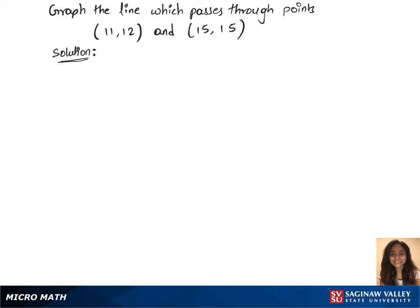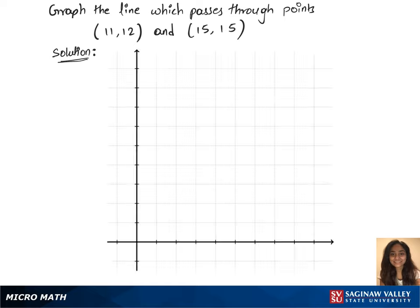To graph the line which passes through these two points, we need a graph first. Let's take up a first quadrant, since the x and y coordinates of both points are positive.